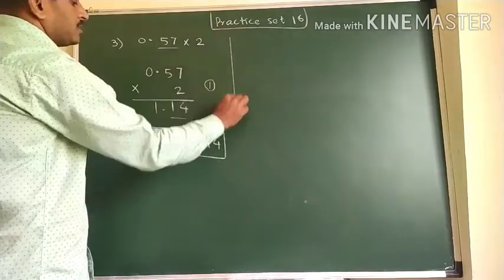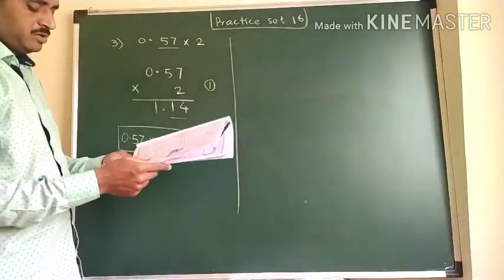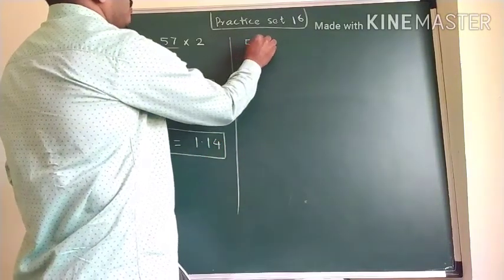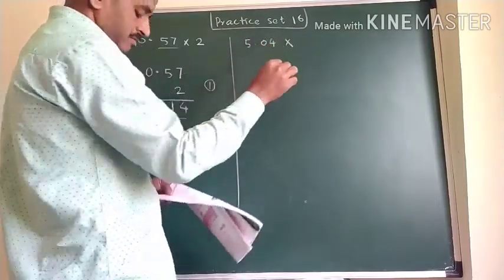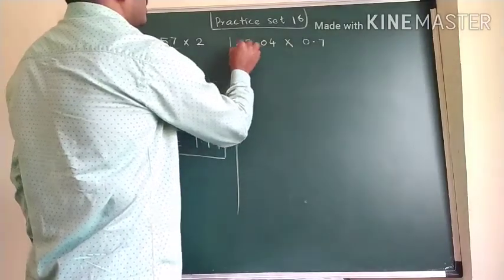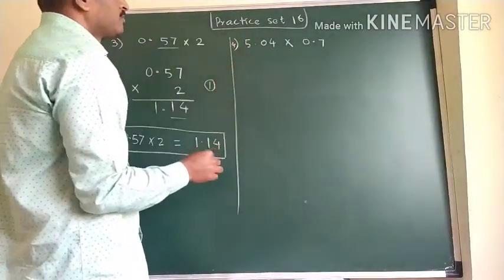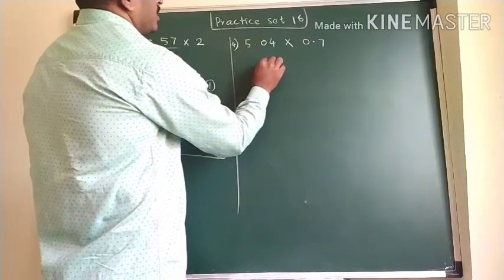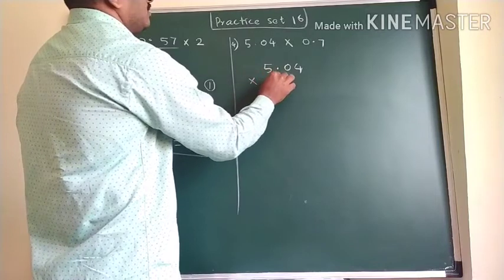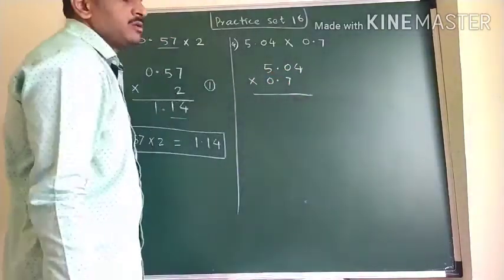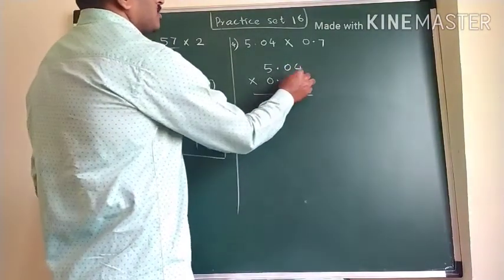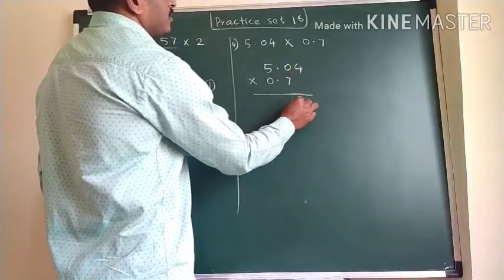Now the next question we have to solve is 5.04 multiplied by 0.7. We write this in vertical form. We multiply by 7: 7 fours are 28.